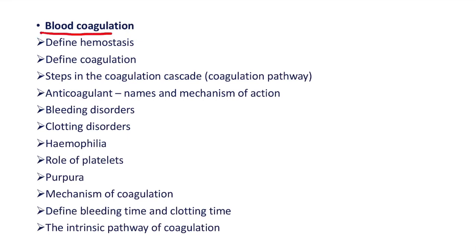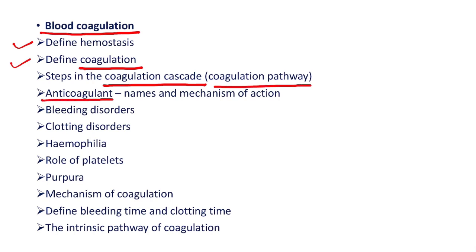Then, blood coagulation. Here, definition of hemostasis, definition of coagulation, then steps in the coagulation cascade — the coagulation pathway was asked. Then, add a note on anticoagulants — you will need to mention the names and mechanism of action of the anticoagulants.